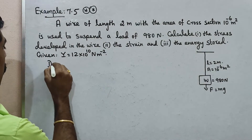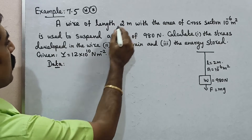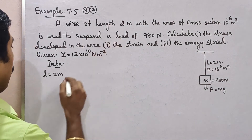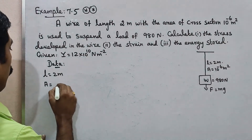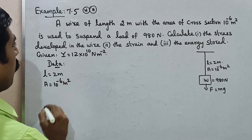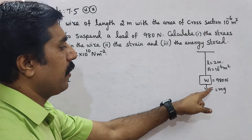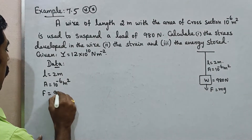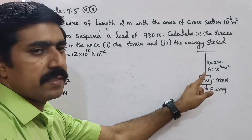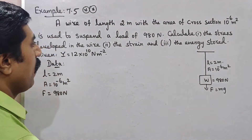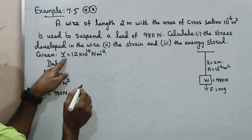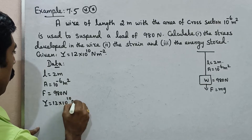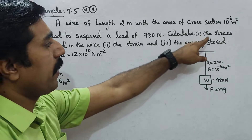First one: length L is equal to 2 meters, area of cross section A is equal to 10 power minus 6 meters square, then load — weight and force both are same — F is equal to 980 newtons. You know the formula W equals MG and F equals MG. Young's modulus Y is equal to 12 into 10 power 10 newtons meter power minus 2.